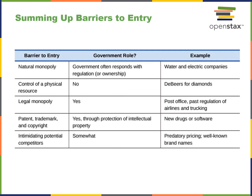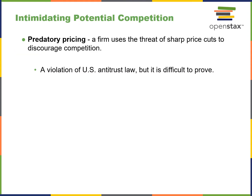If you have to sum up barriers to entry, this would be a nice table to have an understanding of — and we'll probably see this on the test. Predatory pricing is where a firm uses sharp price cuts to discourage competition. It's a violation of antitrust law, but it's difficult to prove.